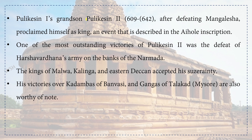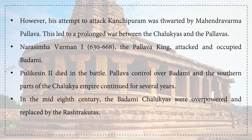Pulakeshin II was the grandson of Pulakeshin I. After defeating Mangalesa, he proclaimed himself king, an event described in the Aihole inscription. One of his most outstanding victories was the defeat of Harshavardana's army on the banks of the Narmada. The kings of Malwa, Kalinga, and Eastern Deccan accepted his suzerainty. His victory over the Kadambas of Banwasi and Gangas of Talakad (present-day Mysore) are also noteworthy. However, his attempt to attack Kanchipuram was thwarted by Mahendravarman Pallava, leading to a prolonged war between the Chalukyas and Pallavas.